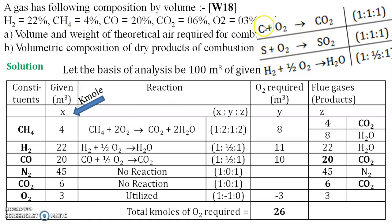The combustion calculation is somewhat different here because in solid fuel the components are carbon, sulfur, and hydrogen, whose combustion reaction ratios are very simple — 1 to 1, or 1 to half type reactions. But here you have to calculate the oxygen requirement for molecules such as CH4 and carbon monoxide. So we consider CH4 as carbon and hydrogen separately.